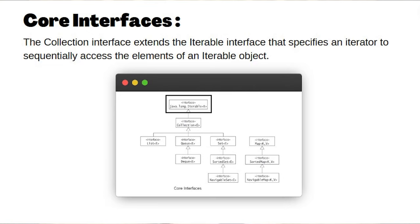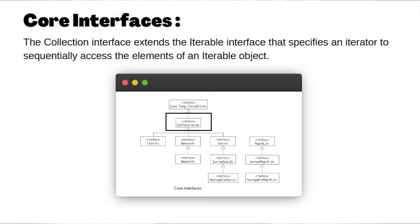There is this Iterable interface that sits at the top of the collection chain. Iterable is not part of the collection framework — it is part of the java.lang package. Now let's take a look at the core interfaces of collection. A collection is an interface, not a concrete class, so you can't instantiate it. Collection extends Iterable, and from collection we have a List interface, a Queue interface, and a Set interface.